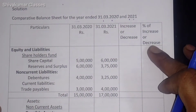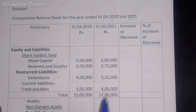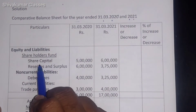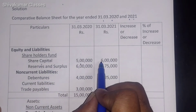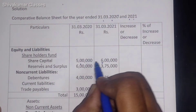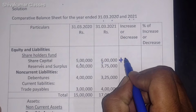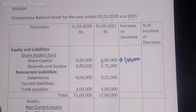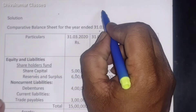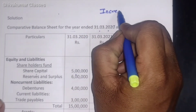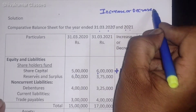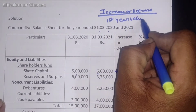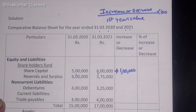To work out this answer, we have only one formula. Let me show it for the first one — in the same manner we need to continue for the remaining ones. The formula is: Increase or Decrease, divided by First Year Value, multiplied by 100.